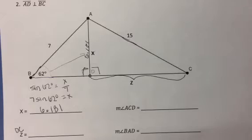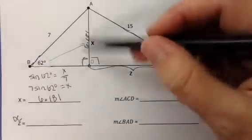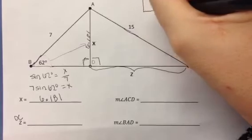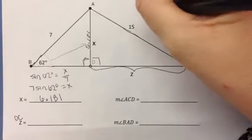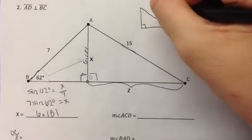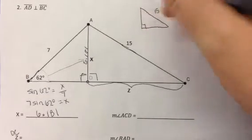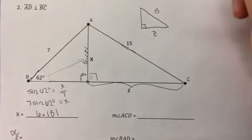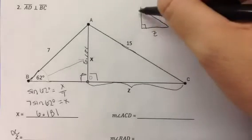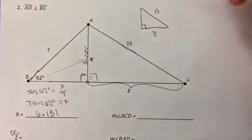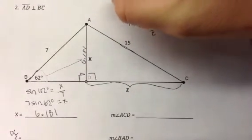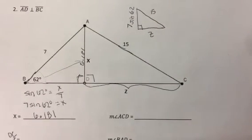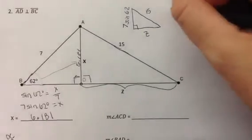I'm going to do it really precisely, but I know you might be tempted to use this rounded answer. If we want to find this side z, we essentially have a right triangle where the hypotenuse is 15. We found this side already. We're looking for side z. We don't know these two angles yet, although I suppose we could have found one of the angles first. What we also know is that this is 6.181, but that's a rounded answer. You really used 7 times the sine of 62 to get that answer.